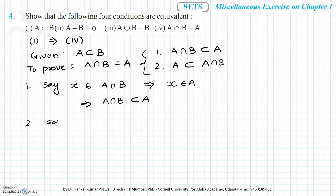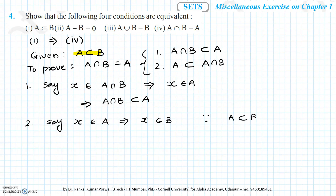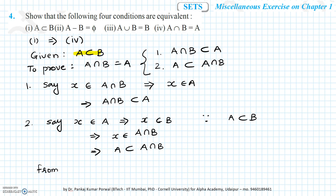For the second statement — A is a subset of A intersection B — we assume there is some x that belongs to A. This x may or may not belong to B in general, but because we know A is a subset of B, this implies x will belong to B. So this implies x will belong to A intersection B, which means A is a subset of A intersection B. From cases 1 and 2, we conclude that A intersection B is equal to A. Hence proved.